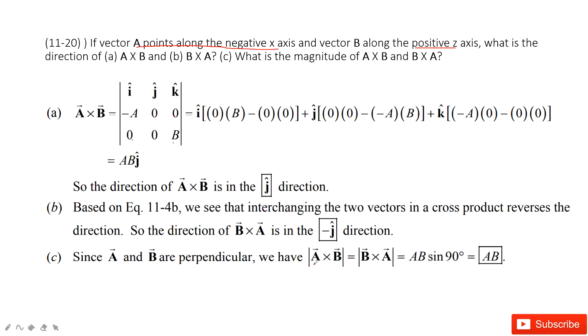So of course, A cross B is AB sine 90 degrees. B cross A is BA sine 90 degrees. So that's it. Thank you.